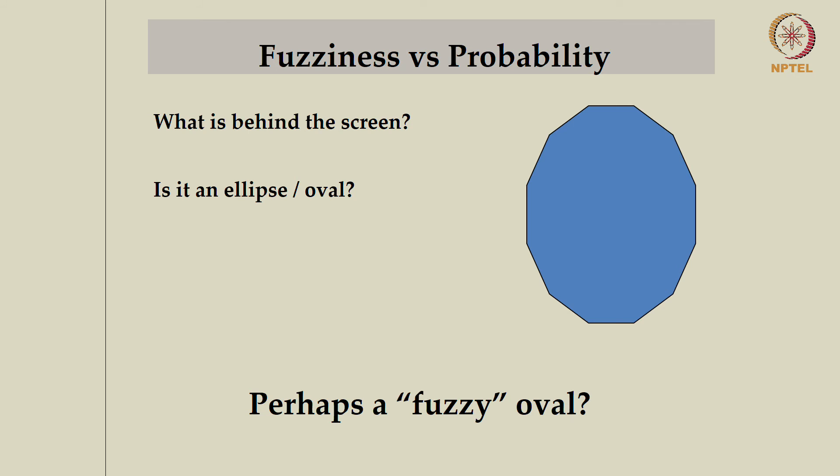Whereas in fuzziness, on the contrary, we have all the information about the element, about the object. But now, we are wondering not whether it belongs to the set of ellipses, but to what extent it could belong to that set. Much like what we have seen in one of the previous lectures about the ball with different shades of blue and we were wondering whether it belongs to the set of blue balls.